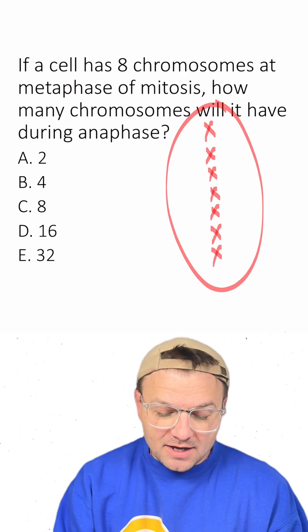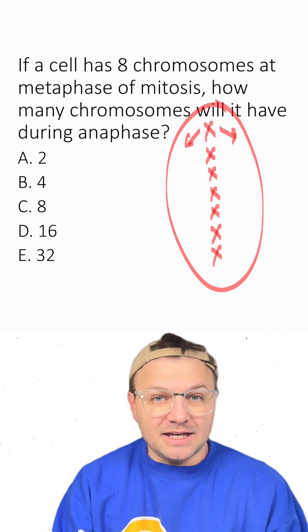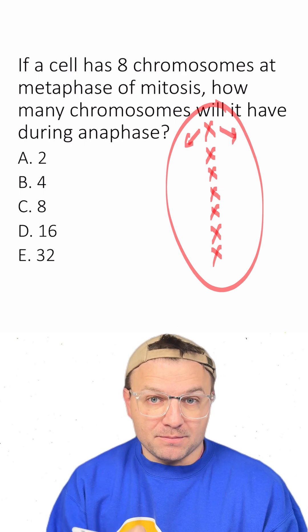Now, after anaphase, these chromosomes are going to have split and each chromatid is going to go to the opposite pole.